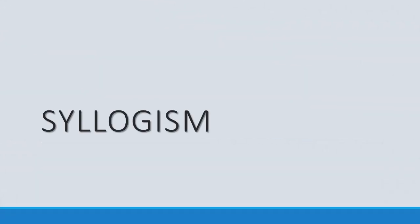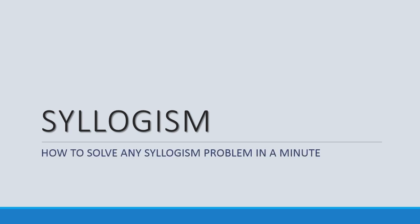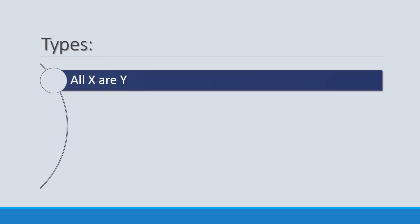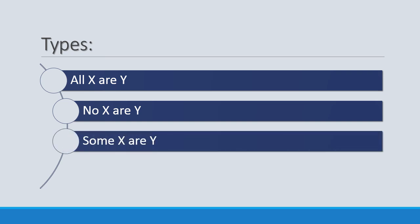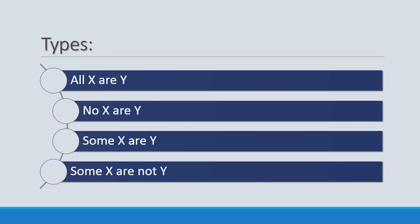Hello guys, today's topic is syllogism and we are going to learn how to solve any syllogism in a minute without using Venn diagrams. There are four possible types of statements in any syllogism problem. First, 'All X are Y' — this is called universal affirmative. 'No X are Y' — this is called universal negative. 'Some X are Y' — this is particular affirmative. And 'Some X are not Y' — this is particular negative.